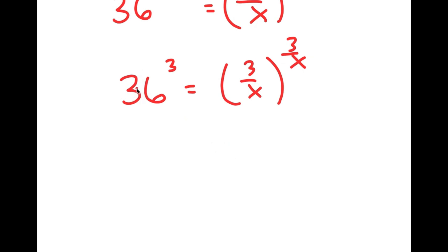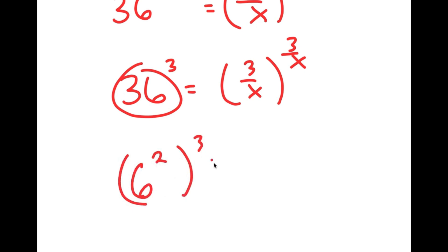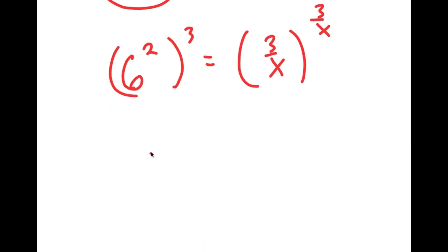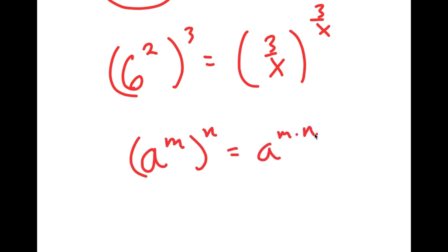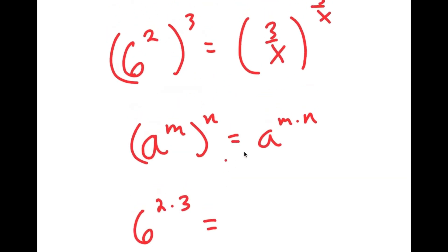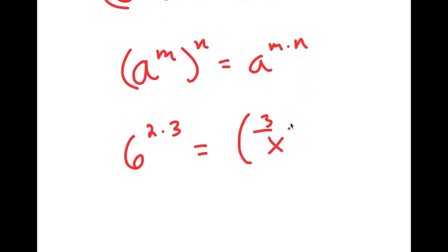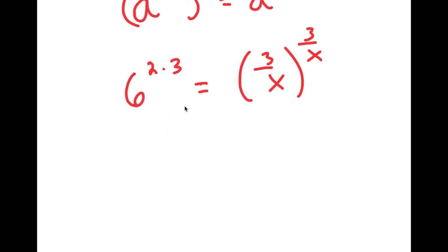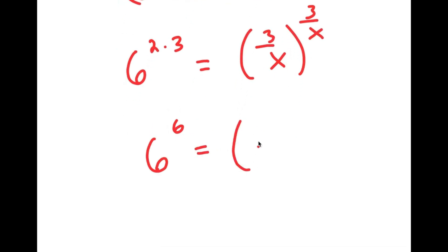From here, I can rewrite 36 as 6 squared. So I get 6 squared to the power of 3, is equal to 3 over x to the power of 3 over x. And if I have something in the form a to the power of m to the power of n, this equals a to the power of m times n. So 6 to the power of 2, to the power of 3, equals 6 to the power of 2 times 3. And 2 times 3 is 6, so I get 6 to the power of 6 is equal to 3 over x to the power of 3 over x.